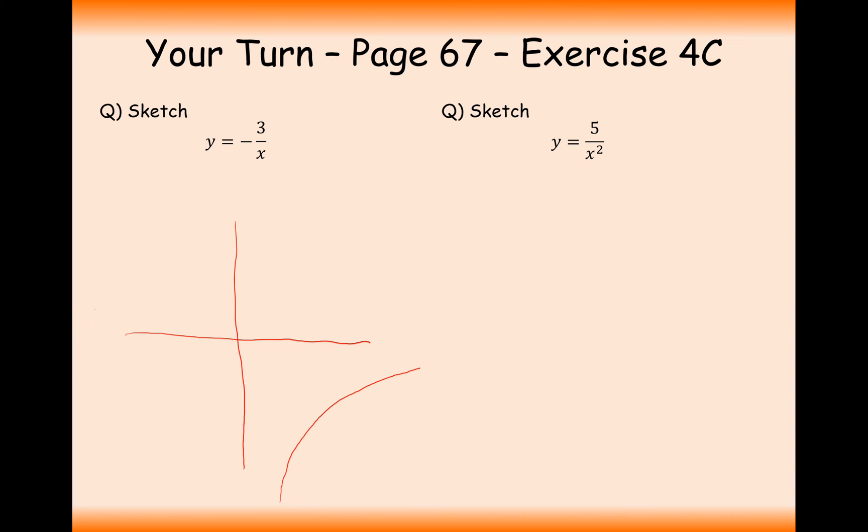It's going to be symmetrical on the diagonal opposite side of the graph, so it's going to go up here. How can you tell the difference between a y equals minus 1 over x graph and a y equals minus 3 over x graph? Just try and draw it a little bit further away from the asymptotes as you normally would.